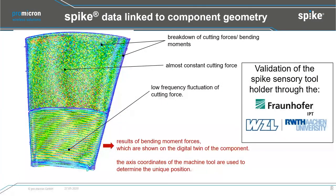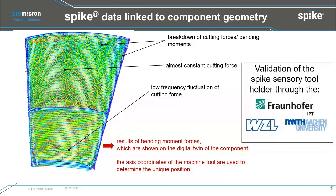The last example: Promicron is not just recording Spike data — we are working on machine connection. In specific projects with the Fraunhofer Institute and others, we combined Spike data with machine axis data, allowing us to locate cutting forces directly on the position on the workpiece. For blisk manufacturing — a highly advanced precision application — we developed a solution that combines this information so you can see bad quality directly on the workpiece in 3D, eliminating the need for a separate quality check.